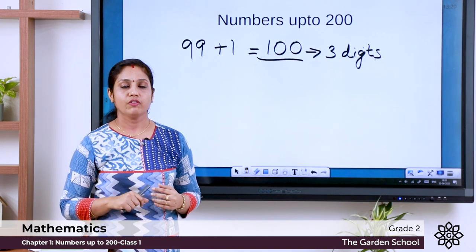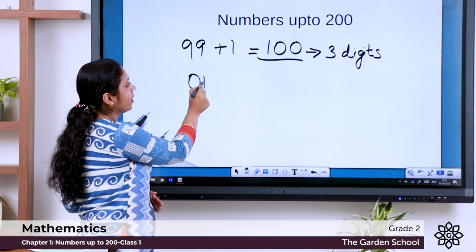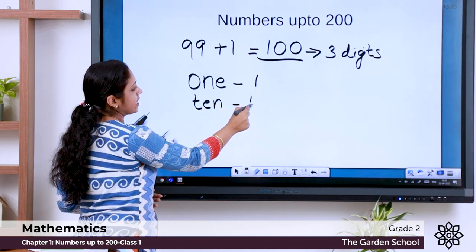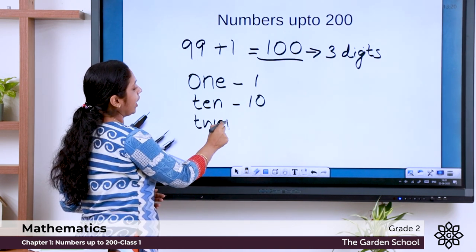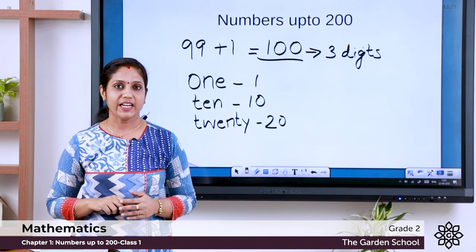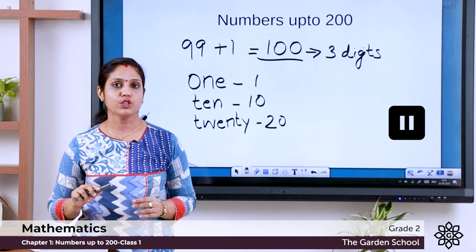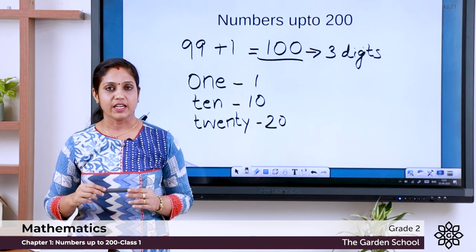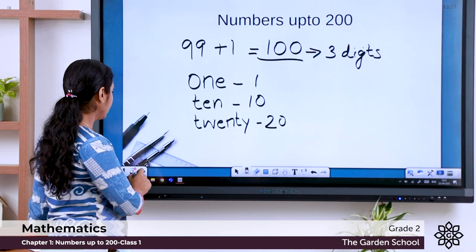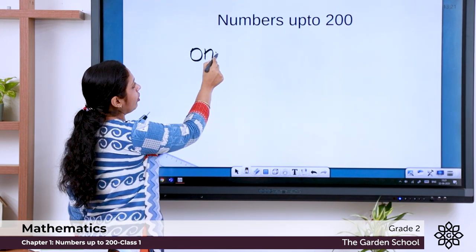Open your textbook to page number one. You can see the number names there. We have already learned the number names from one to hundred — let's revise. You know: O-N-E is 'one,' T-E-N is '10,' T-W-E-N-T-Y is '20.' Now I am going to give you another activity: write the number names from 1 to 20. Pause the video and write them. The exercise in the textbook can be done as homework.